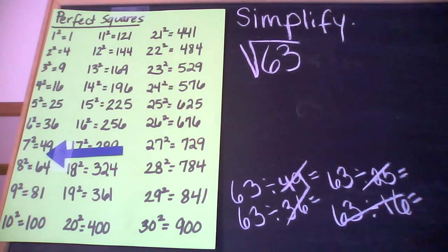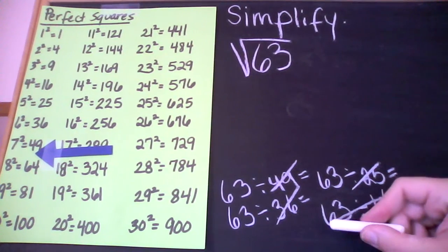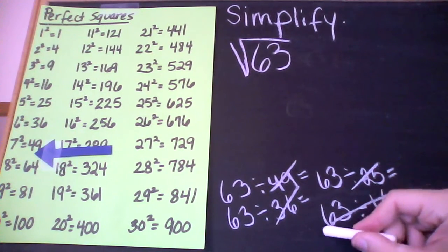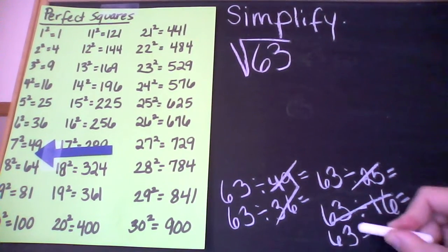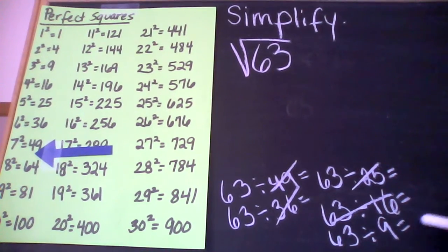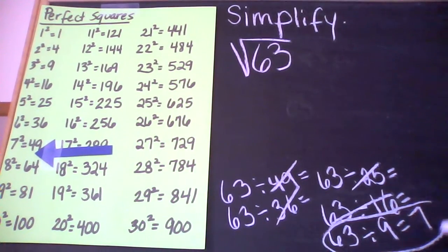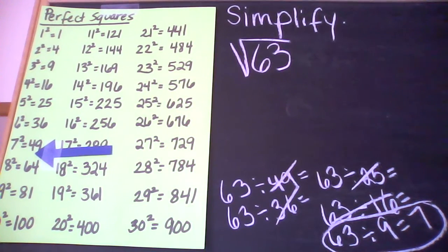My last one I have to try in order is 9. And when I do 63 divided by 9, I get 7. So I know now which perfect square goes into 63: 9.